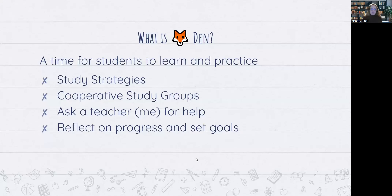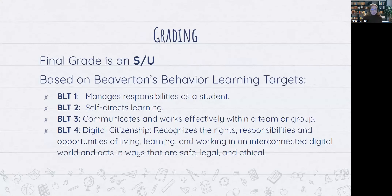So what is Foxten? Foxten is a time for students to learn and practice study strategies, cooperative study groups, ask a teacher for help, and reflect on progress and set goals. This class is graded as an S or U — satisfactory or unsatisfactory — and that is based on Beaverton's behavior learning targets, which include managing responsibilities as a student, self-directing learning, communicating and working effectively with a group, and digital citizenship.